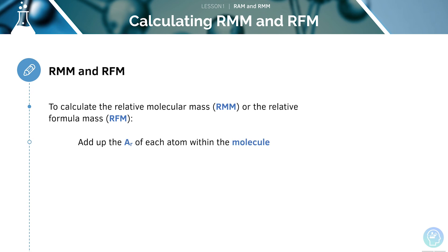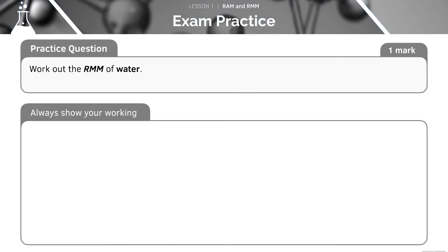To calculate the relative molecular mass, or the relative formula mass, we have to add the relative atomic masses of each atom within the molecule. Let's work through this example together. Pause the video now and have a go at this question.